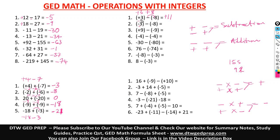Here we have a negative 3. Negative times negative gives us a positive 8. So after opening the parentheses we have negative 3 and positive 8 — we do subtraction. We subtract 3 from 8, giving us 5. The sign takes the sign of the bigger number, which is positive.